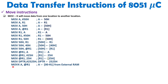When you execute MOVX A, @R1, the 'X' after MOV indicates an external RAM operation. Here @R1 refers to an address in external RAM. Since R1 is 8 bits and external RAM addresses are 16 bits, 00 is padded in the upper byte — so if R1 is 15H, the 16-bit address becomes 0015H. The data at that external RAM location is then moved into the accumulator. Remember, 'X' is used for external RAM access.